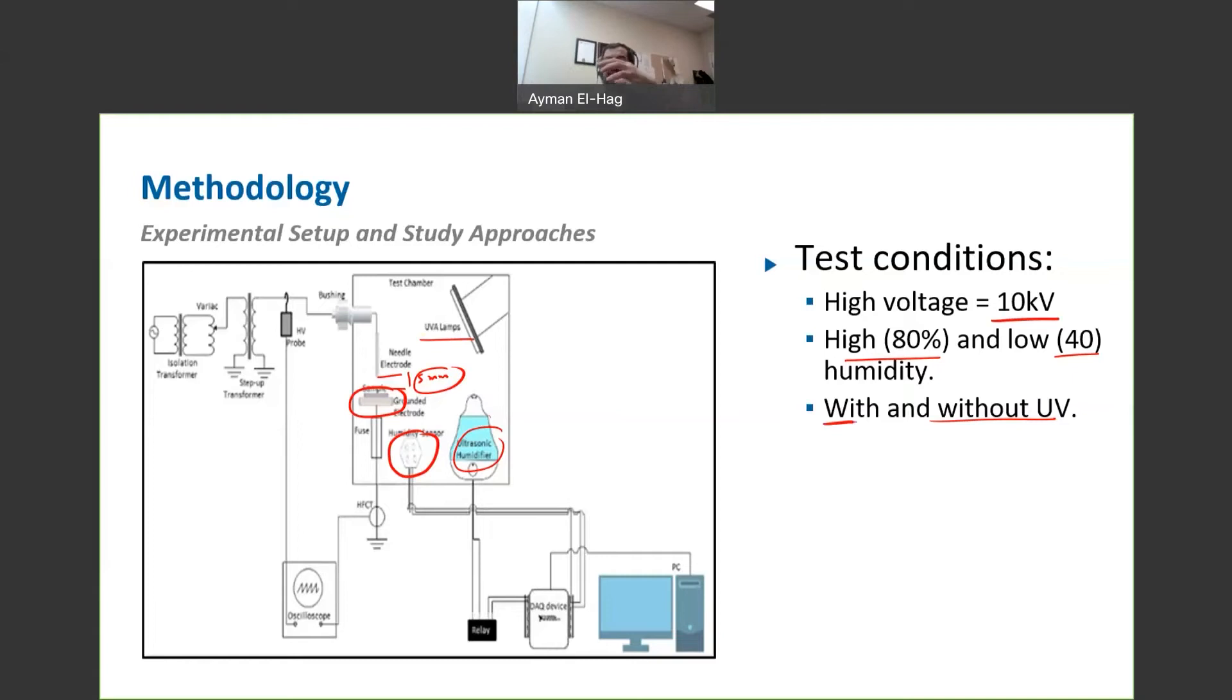And combine all these three factors, the electrical stress, the humidity, and the UV. We want to see the impact of these factors on the surface of non-ceramic insulators, and more specifically on silicone rubber. How we evaluate, how we assess the material after aging? We will try two different things: static contact angle measurement and scanning electron microscopy or SEM. But before going through some of the very preliminary results, let's go to the lab and have a look about how the setup looks like in real life.